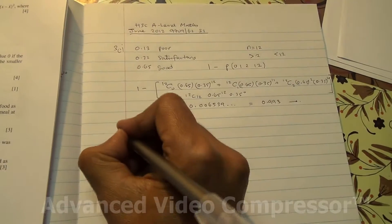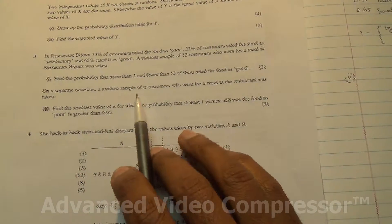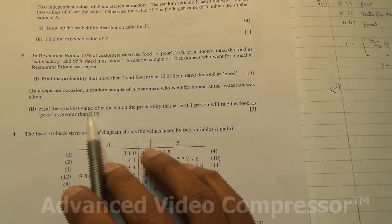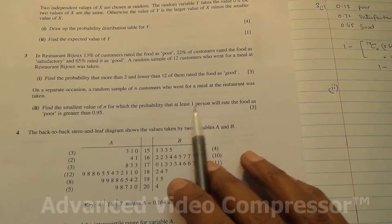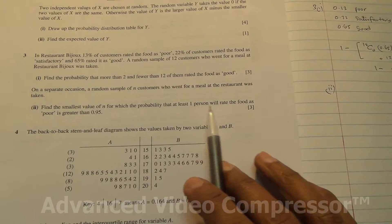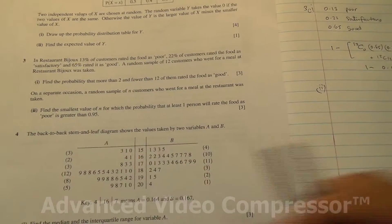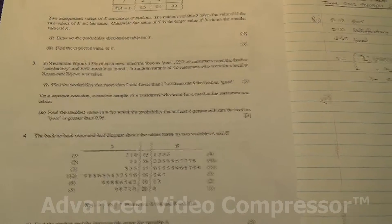For the second part, on a separate occasion, a random sample of n customers who went for a meal at the restaurant was taken. Find the smallest value of n for which the probability that at least one person will rate the food as poor is greater than 0.95. So at least one person will rate the food as poor.